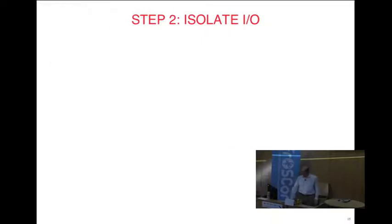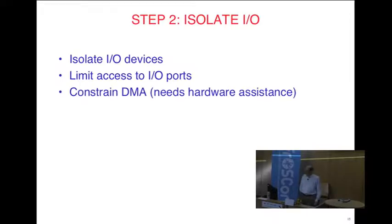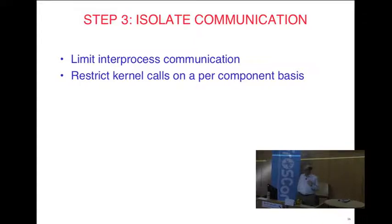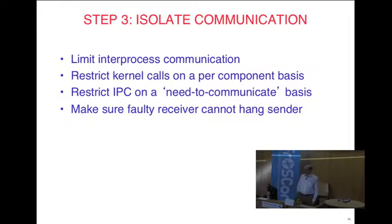Step two is to isolate all the I/O devices and limit access to I/O ports. In a conventional everything-in-the-kernel system, the audio driver has access to the disk — it's not supposed to, but technically it can write on the disk. That has to be prohibited. You also have to constrain DMA so you can't DMA over somebody else's memory. Then isolate the communication — restrict inter-process communication so not everybody can talk to everybody, only those components that need to talk to each other.